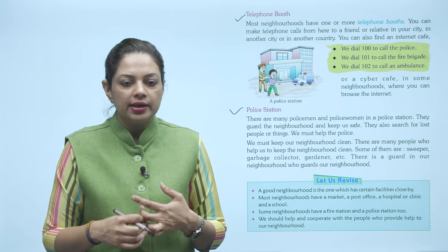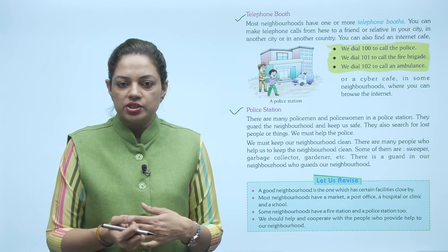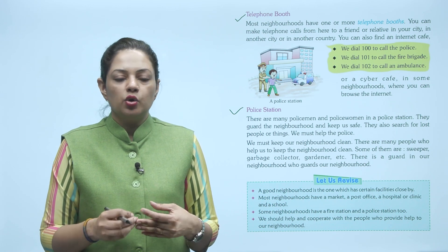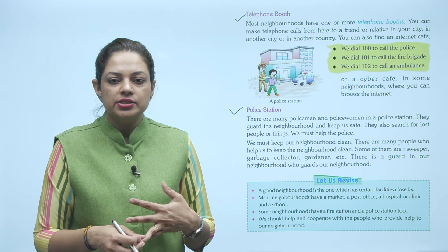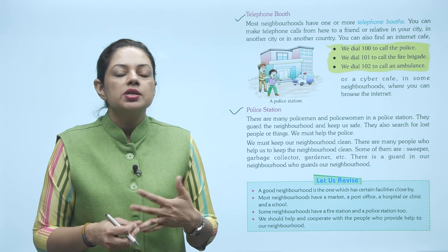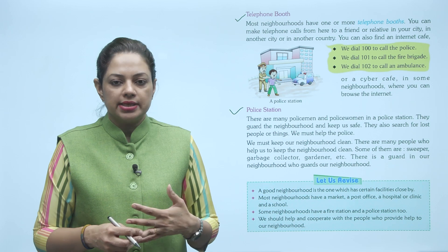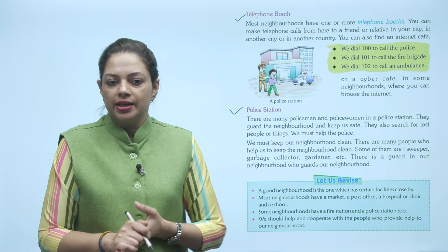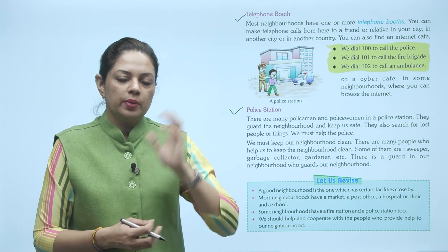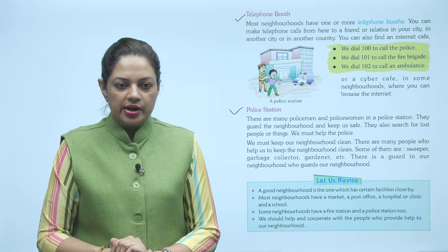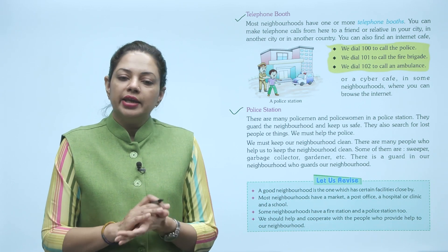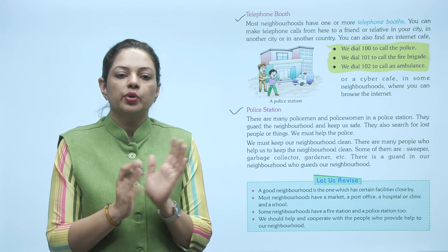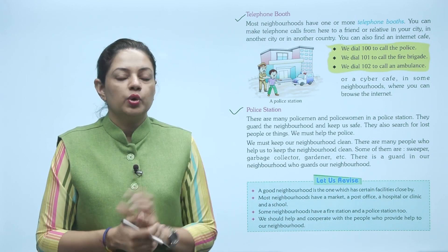We must keep our neighborhood clean. Hameein apna neighborhood clean rakhna chahiye, saaf rakhna chahiye. There are many people who help us to keep the neighborhood clean — jaise ki sweeper yaani safai karne wala, garbage collector yaani kooda uthane wala, aur gardener yaani maali jo sukhi pattiyon ko uthaata hai. There is also a guard in our neighborhood who guards and protects the whole neighborhood — colony mein ek guard hota hai jo poore neighborhood ko surakshit rakhta hai.